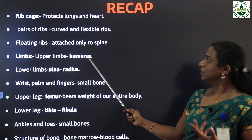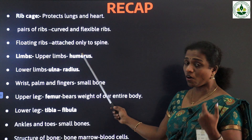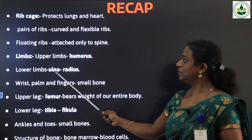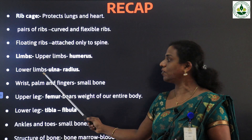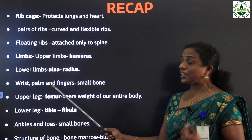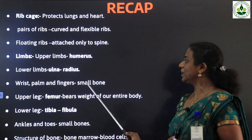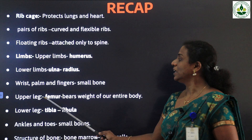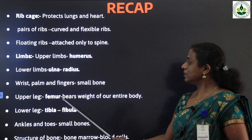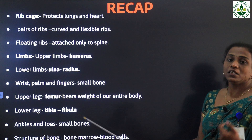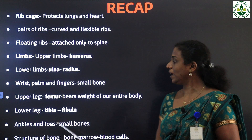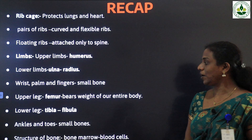Then we studied limbs. Limbs are of two types: upper limb and lower limb. The upper limb has one long bone known as humerus. The lower limb has two types of bones: ulna and radius. Then the wrist, palm, and fingers are made up of small kinds of bones. Then the upper leg bone name is femur — it bears the entire weight of our body. Then the lower leg has tibia and fibula.